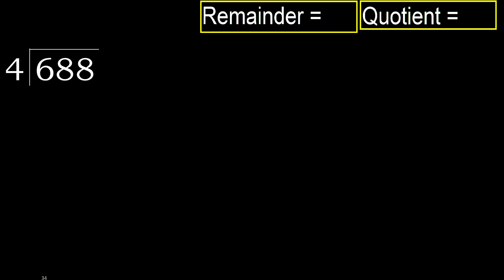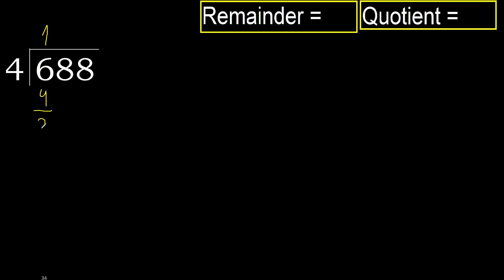688 divided by 4. 6 is not less — therefore with 6, 4 multiplied by which number is nearest to 6 but not greater? 4 multiplied by 2 is 8, which is greater. Multiply by 1 is 4, which is not greater. Subtract: 6 minus 4 equals 2.